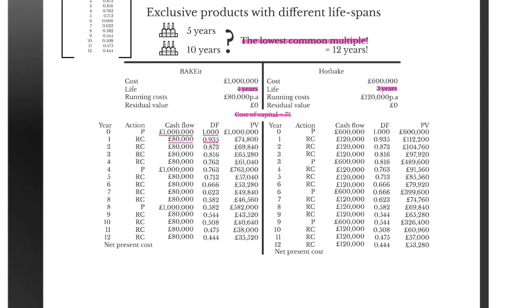We can now calculate the total cost to the organization over a 12-year period of choosing one particular oven over the other. Adding together all the discounted costs, the total cost for the Hot-Bake oven comes to £2,768,640. We can see here that the Hot-Bake is the cheapest option — even though it has higher running costs per year, over the course of 12 periods it is cheaper than using the Bake-It. This is exactly the kind of decision you as a management accountant will have to make.